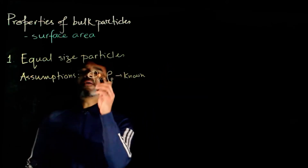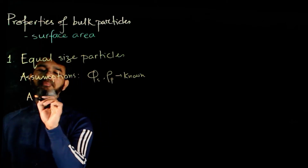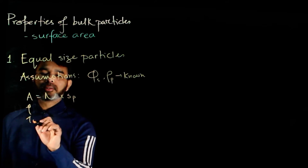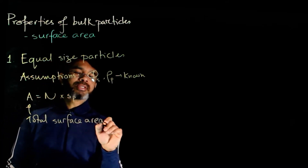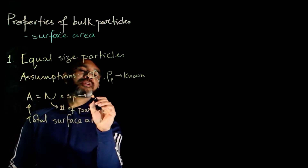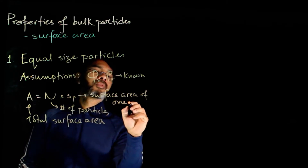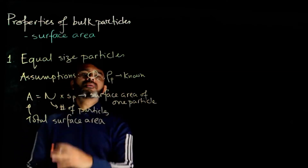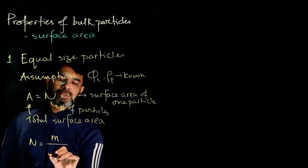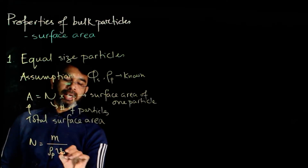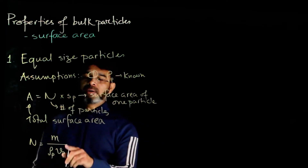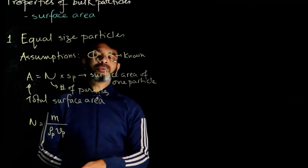For equal-size particles, if you look at the total surface area of a bulk, we can write it as: the total surface area equals n times sp, where n is the number of particles and sp is the surface area of one particle. This gives you the total surface area of the bulk of particles. Now you can get n by dividing the mass of the particles by the density and volume of one particle. If you multiply the volume of one particle by its density you get the mass of one particle, and dividing the total mass by the mass of one particle gives you the total number of particles.